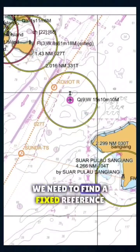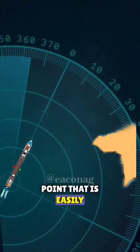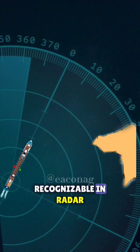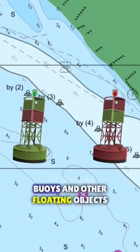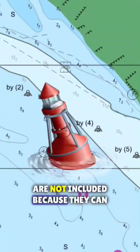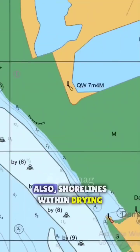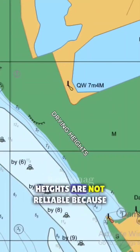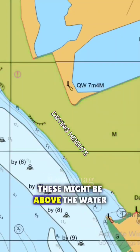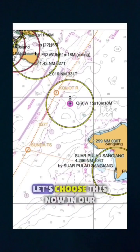First, in a chart, we need to find a fixed reference point that is easily recognizable on radar. Buoys and other floating objects are not included because they can drift away any time. Also, shorelines within drying heights are not reliable because these might be above the water by the time you are in the area.